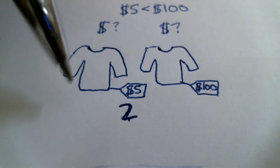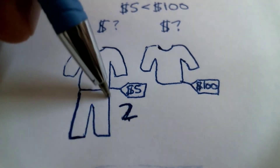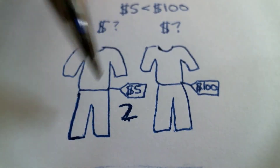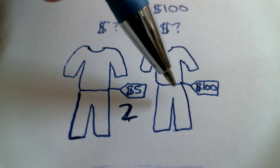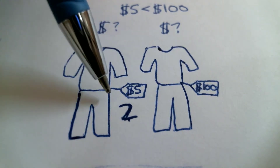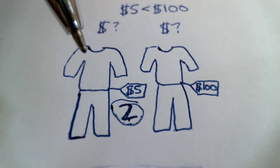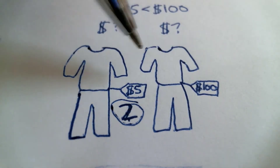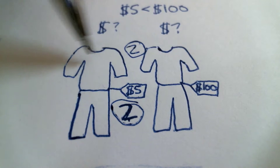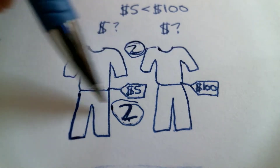Now here are... here's one pair of pants, and here's another pair of pants. One pair of pants, two pairs of pants. How many pairs of pants are there here? There are two pairs of pants. How many shirts are here? There are two shirts here, and two pairs of pants.